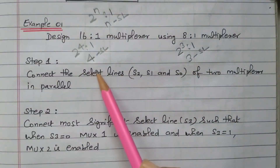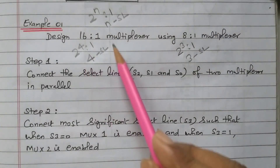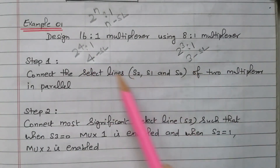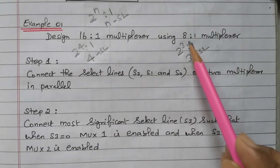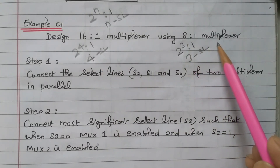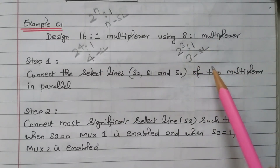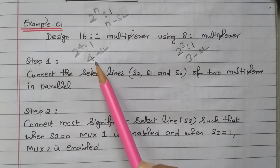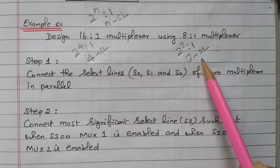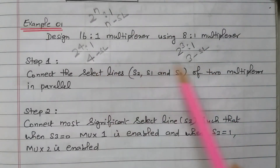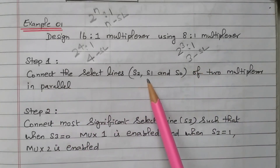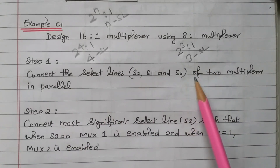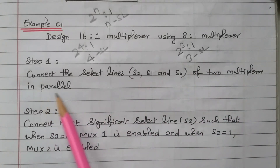Now we will see how to map these 4 selection lines of the 16-to-1 multiplexer to the 3 selection lines of the 8-to-1 multiplexer. Here 4 selection lines are available, but only 3 selection lines are available in each 8-to-1 MUX. Step 1 is to connect the selection lines S2, S1, and S0 of the two multiplexers in parallel.